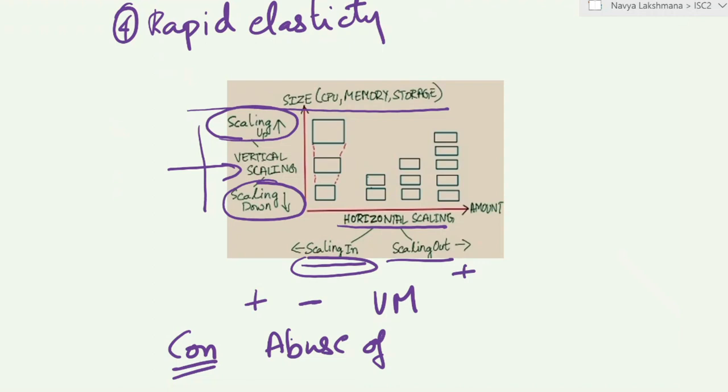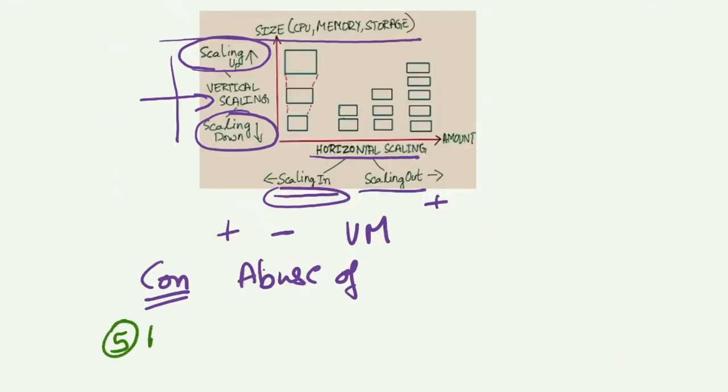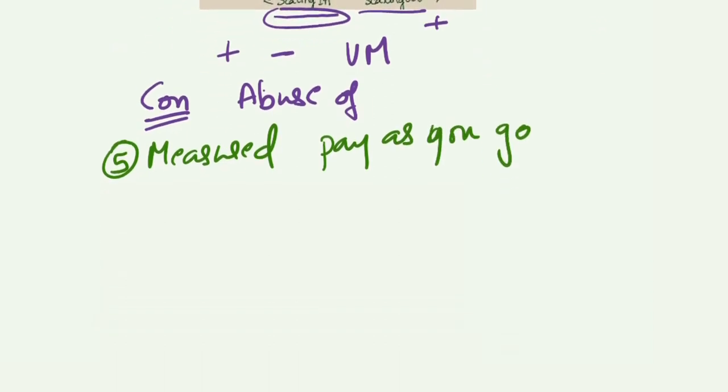The next key characteristic that we will talk about is measured service. This is also called pay as you go. So here the customers are charged only for the resources that they use. It's just like paying your electric or water bill. This is one of the most attractive features of cloud computing from a cost perspective. In cloud, you can actually granularly measure resource usage, control it, report it, or get alerted when you near or exceed the maximum usage limit.